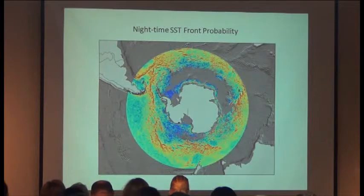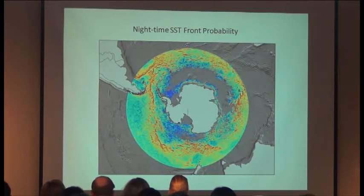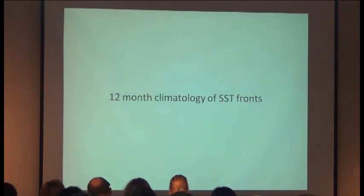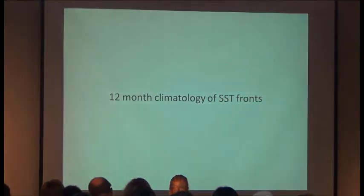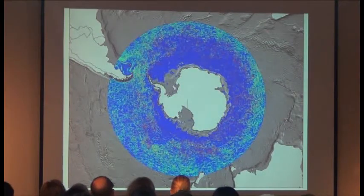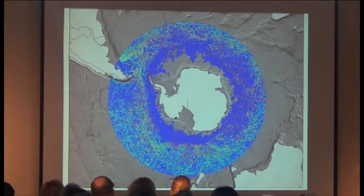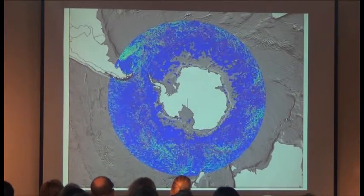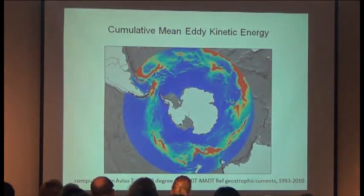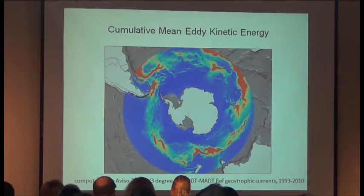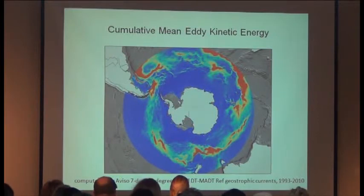Frontal systems, eddies, and other dynamic features are often more interesting to biologists because that's where prey is being aggregated and where predators are often attracted. This is looking at a nighttime sea surface temperature front probability map for the Southern Ocean. This kind of information is much more interesting to use than just looking at raw temperature. In fact, temperature in the Southern Ocean is kind of a nice gradient from cold to colder, so looking at where we might find more dynamics is much more interesting. I'm clicking through a 12-month climatology of fronts showing a lot more detail in fine-grain patterns.